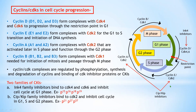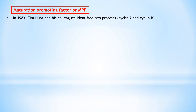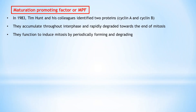Now let's understand maturation promoting factor or MPF in detail. In 1983, Tim Hunt and his colleagues identified two proteins that displayed a periodic pattern of accumulation and degradation in sea urchin and clam embryos. They accumulate throughout interphase and are then rapidly degraded toward the end of mitosis. Hunt called these proteins cyclins — cyclin A and cyclin B — and suggested they might function to induce mitosis by periodically forming and degrading. It was later discovered that in MPF, cyclin B is the regulatory subunit that regulates MPF activation.